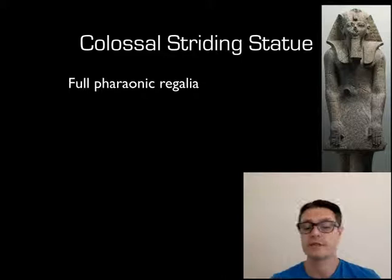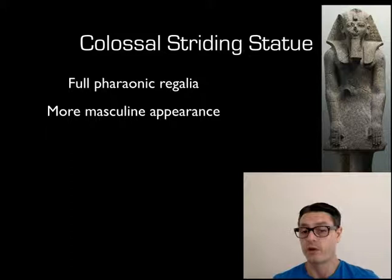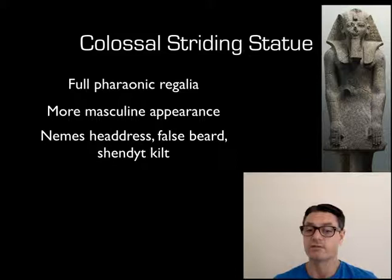Another example is the colossal striding statue — called so because she's very large and also because she's mid-stride. In this one she's wearing that full pharaonic regalia. She also has a far more masculine appearance if you compare the way her body is depicted here with that pink granite statue. She's wearing the full trappings — the Nemes headdress, the false beard, and the shendyt kilt — very much depicting herself as a man.